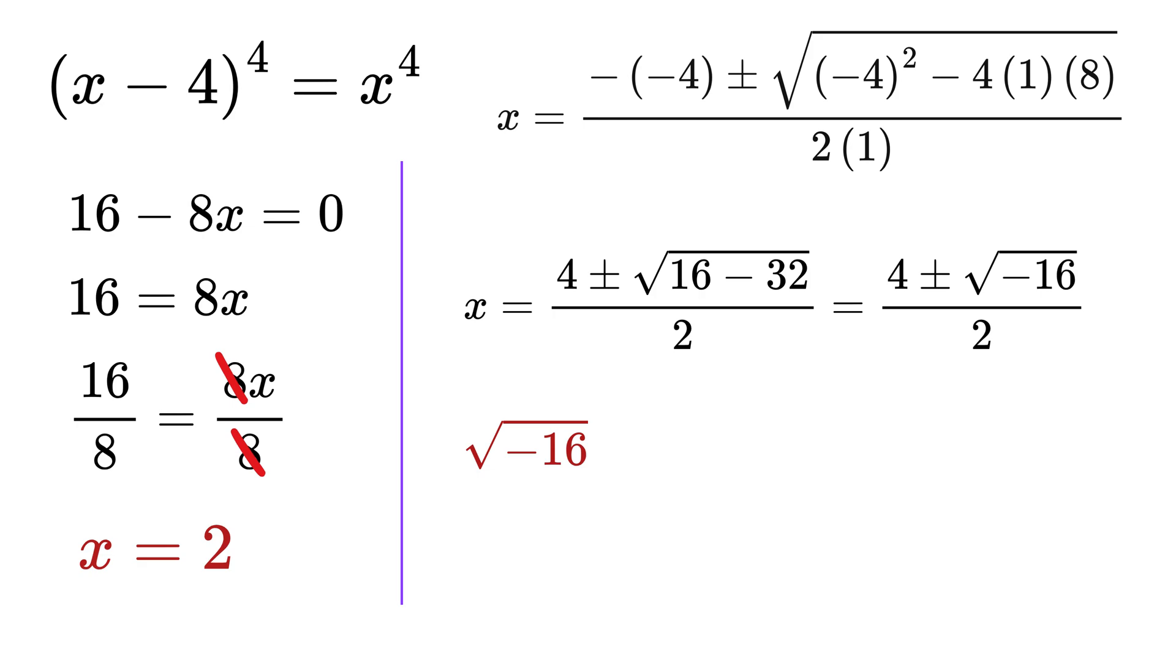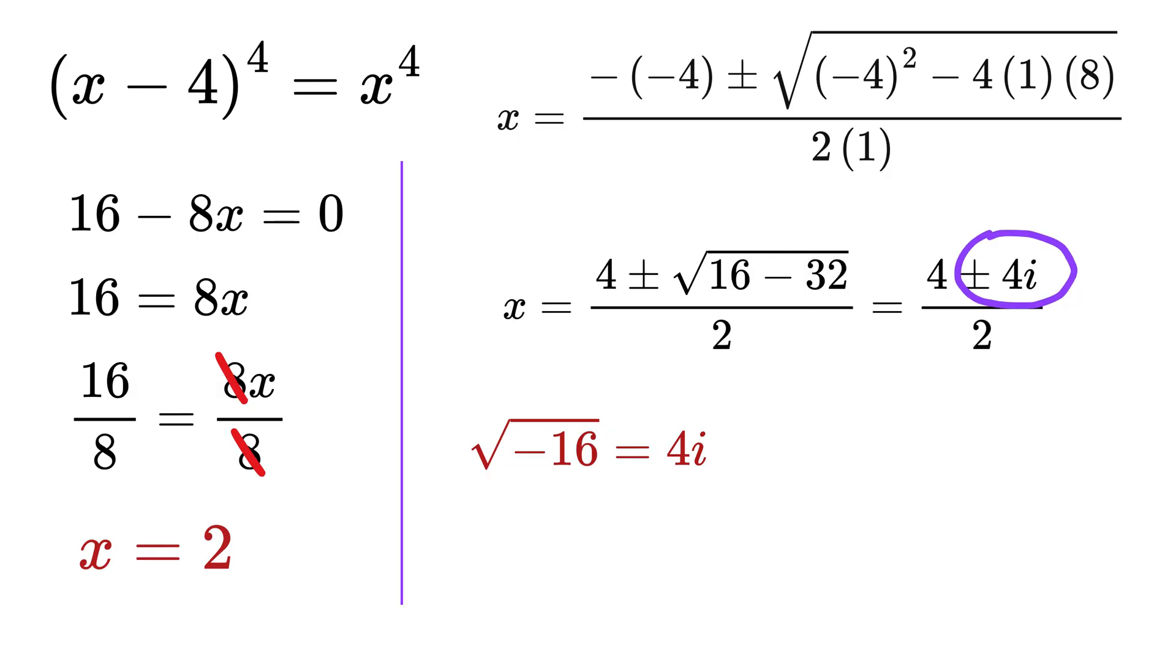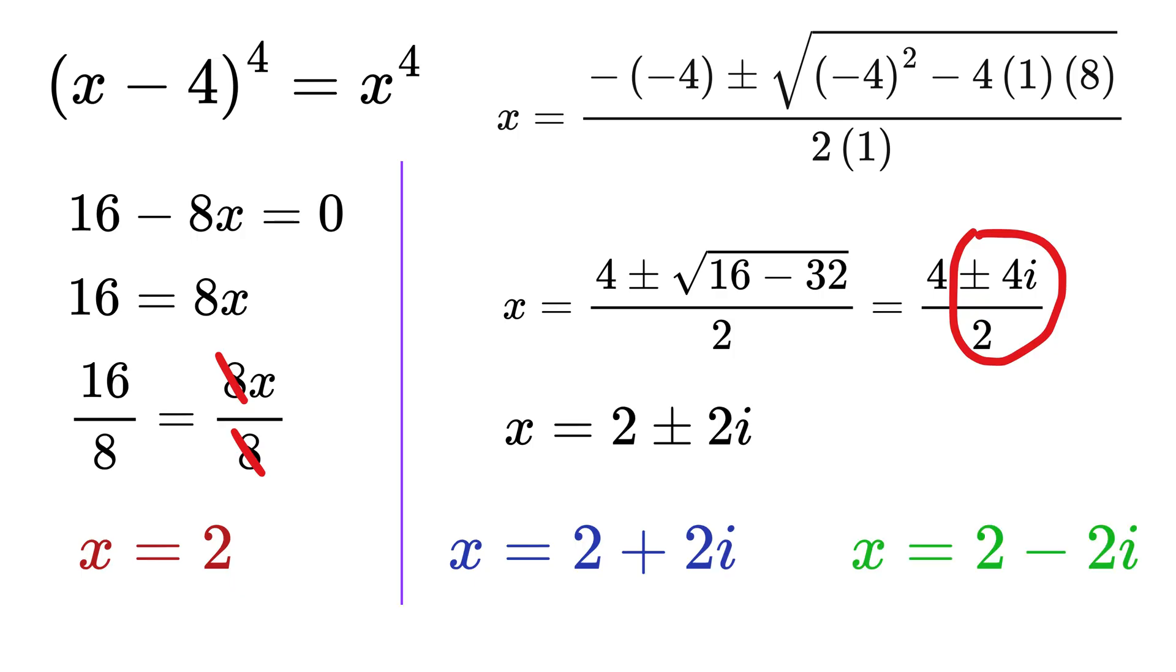Now the square root of negative 16 is equal to the square root of negative 1 times the square root of 16 which is 4. Square root of negative 1 is i and thus square root of negative 16 is equal to 4 times i. So x equals 4 plus minus 4i over 2. 4 over 2 is 2 and plus or minus 4i over 2 is 2i. So x is either 2 plus 2i or x is equal to 2 minus 2i.